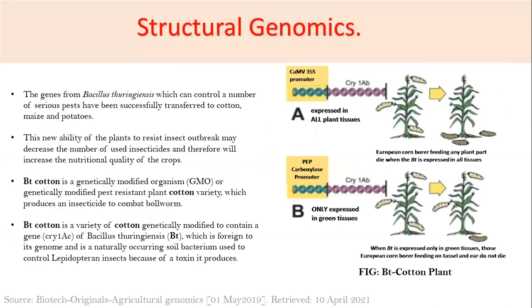The second example is Bt cotton, also an example of structural genomics. A gene was found that could control the effects of certain insects on a plant. This Bt gene was transferred into cotton plants because cotton was attacked by lepidopteran insects that produced toxins harmful to the plant. Scientists transferred the Bt gene into cotton to protect it from these insects and their toxins — this is now known as Bt cotton, a major breakthrough for plant genomics.